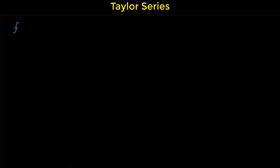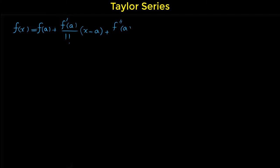In this video I'm going to show you how we can find the Taylor series or Maclaurin series for functions. The Taylor series of the function f of x about point a, or centered at a, is f of a plus f prime of a over 1 factorial times x minus a to the power of 1, plus f double prime of a over 2 factorial times x minus a to the power of 2.